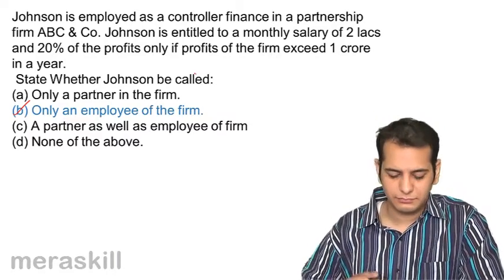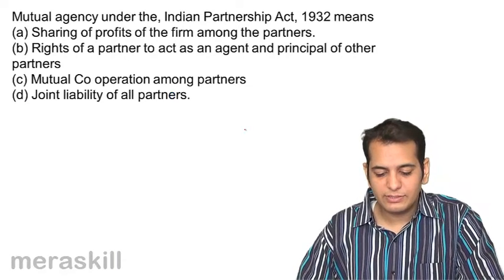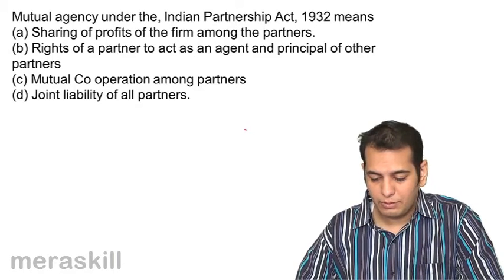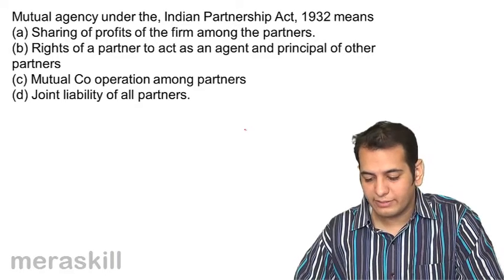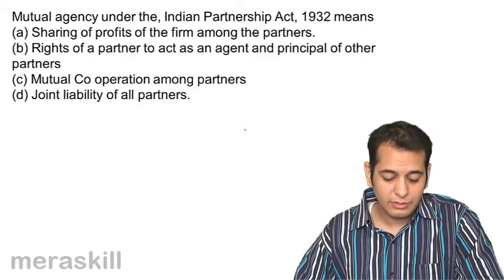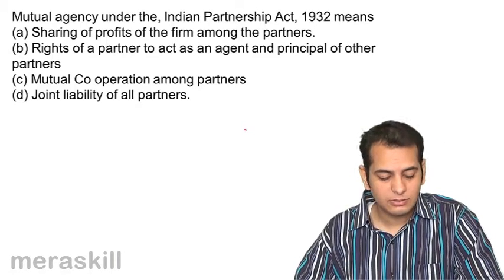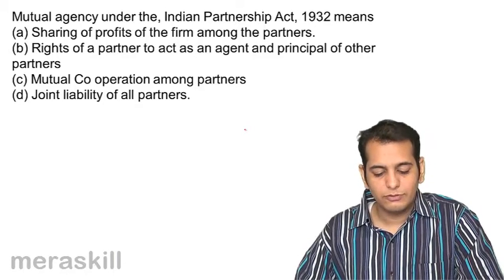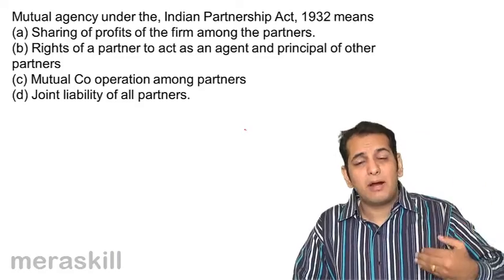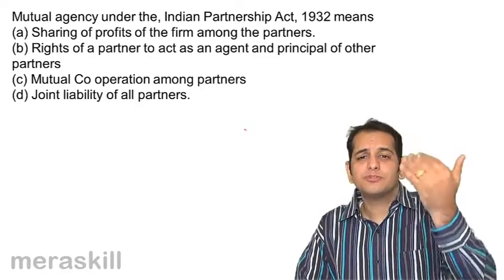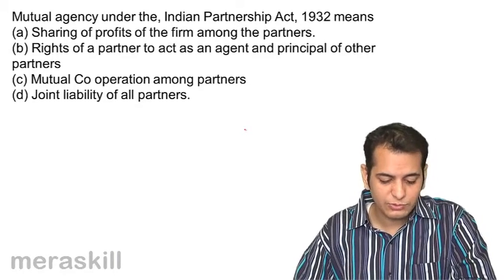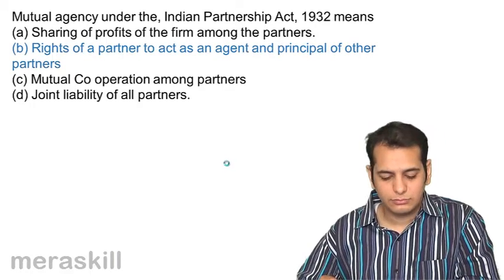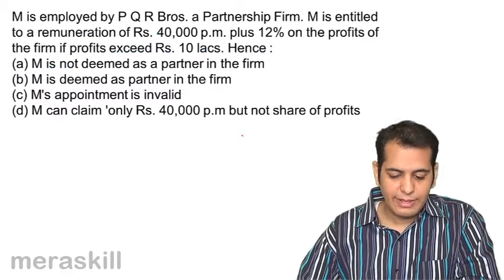Next question: mutual agency under the Indian Partnership Act 1932 means: a) sharing of profits among partners, b) the right of a partner to act as an agent and principal of other partners, c) mutual cooperation among partners, or d) the joint liability of all partners. The answer is: the right of a partner to act as an agent and principal of other partners.